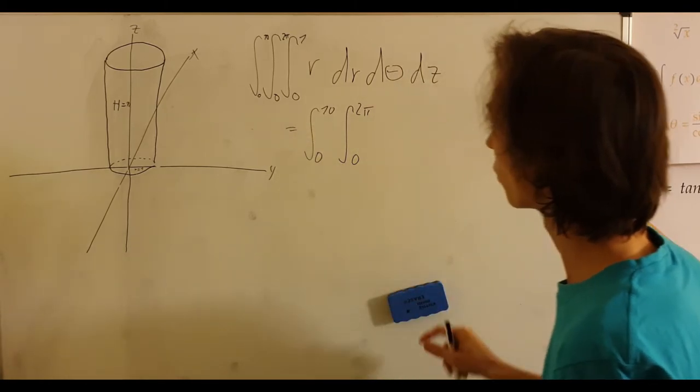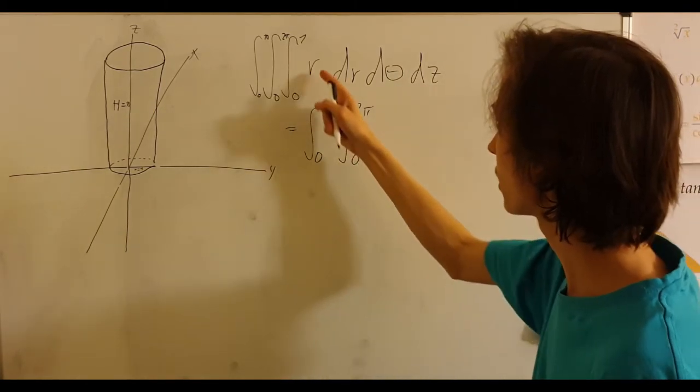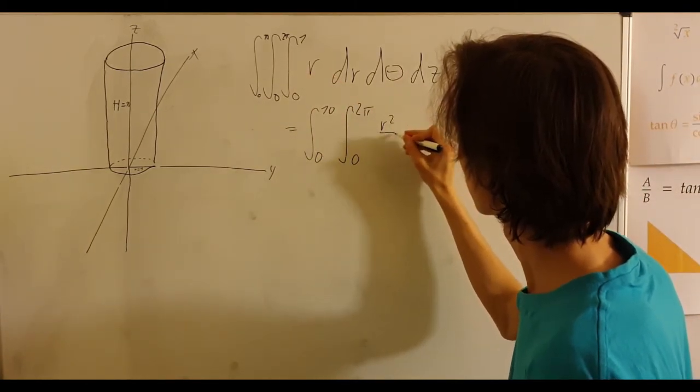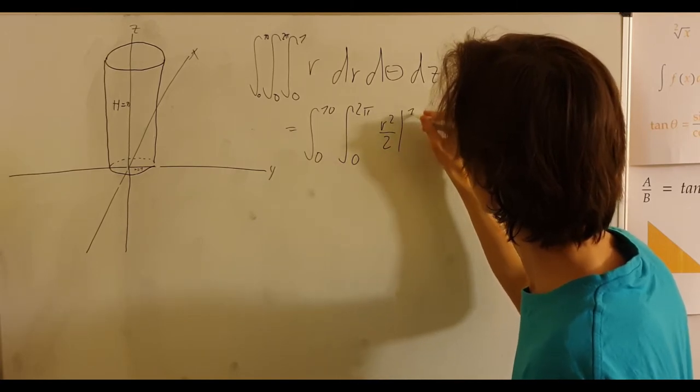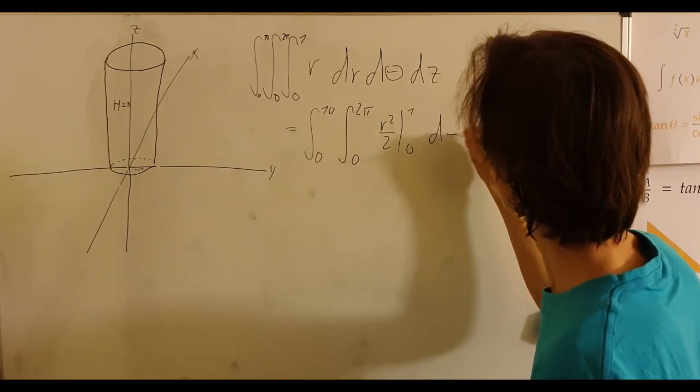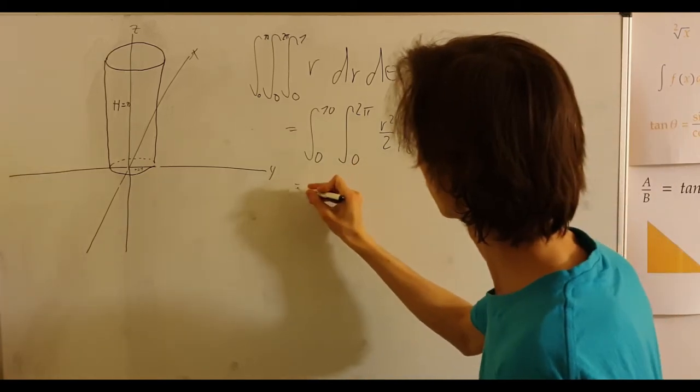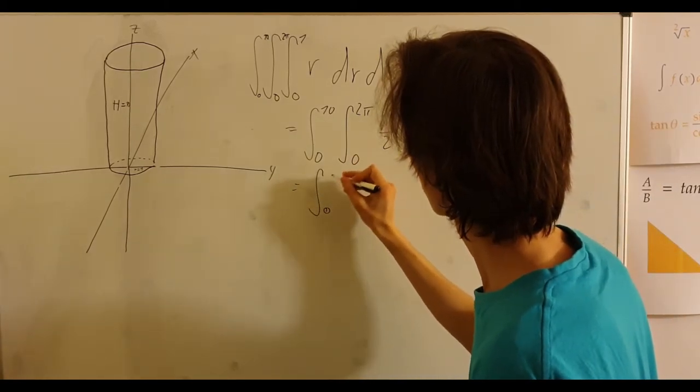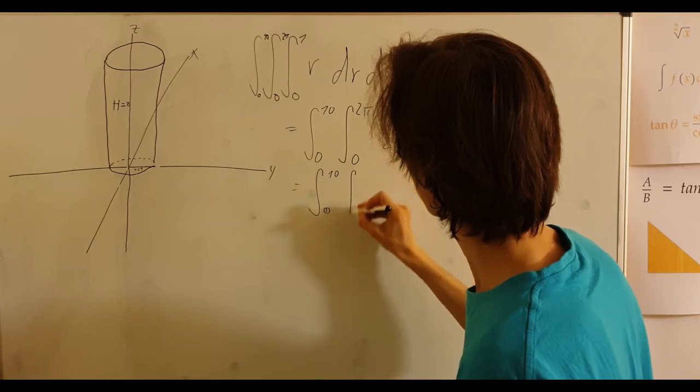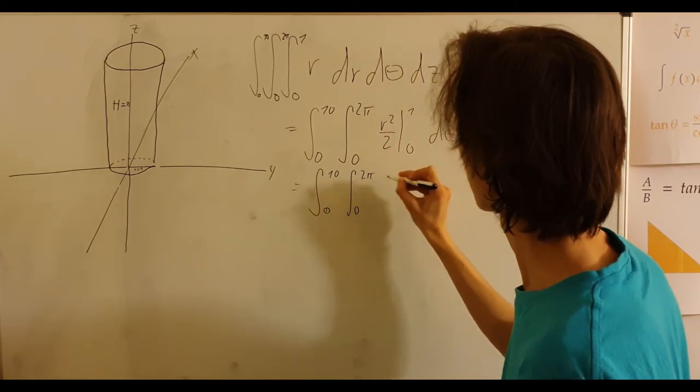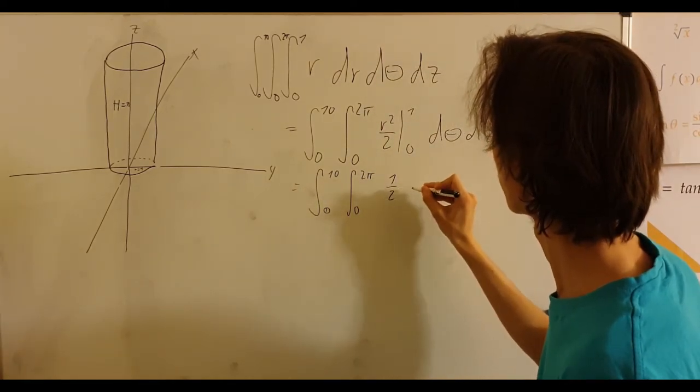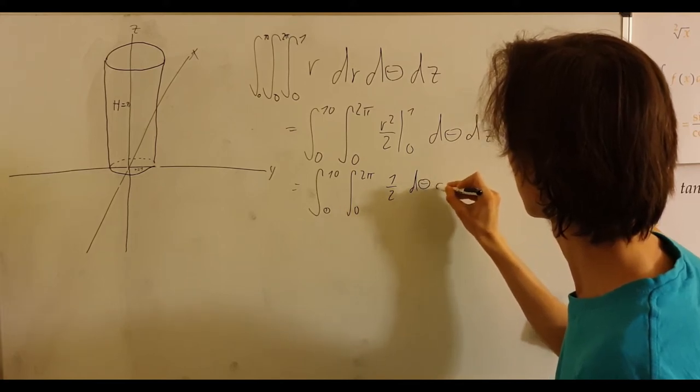0 to 2 pi. And now we will integrate this. r squared over 2 evaluated at 1 and at 0, d theta, dz. Now, let's rewrite this. 0 to 10 and 0 to 2 pi of 1 over 2 d theta, dz.